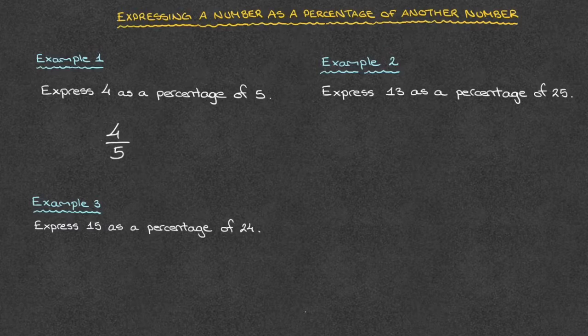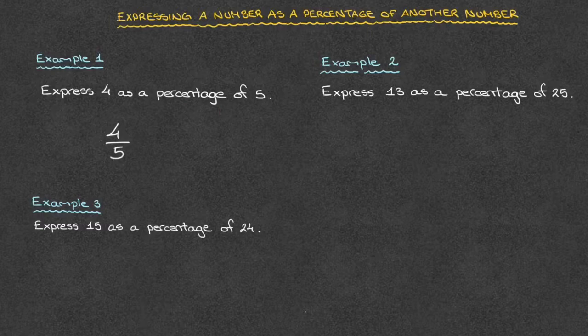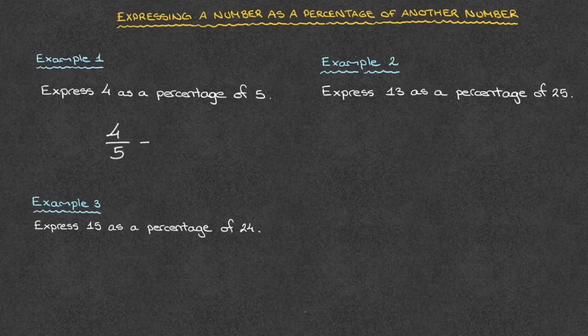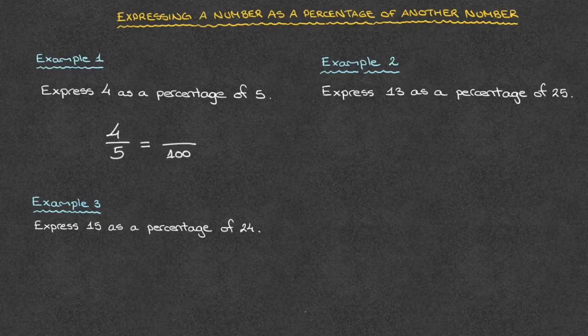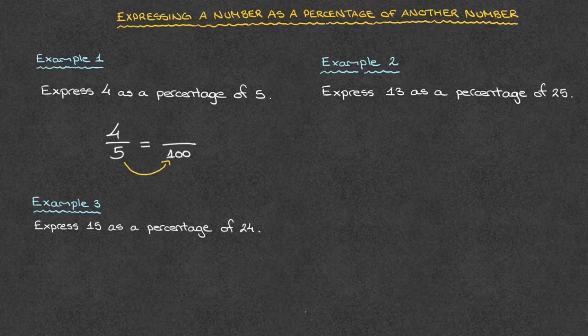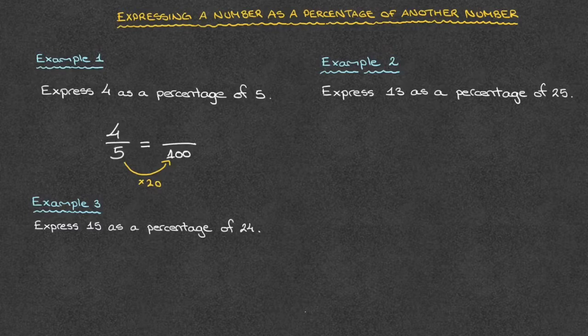Now, remembering that we can think of a percentage as a fraction over 100, our job now consists of rewriting this fraction as an equivalent fraction over 100. And for that, we need to ask ourselves, what do we have to multiply 5 by to get 100? And it doesn't take us too long to see that if we multiply 5 by 20, we get 100.